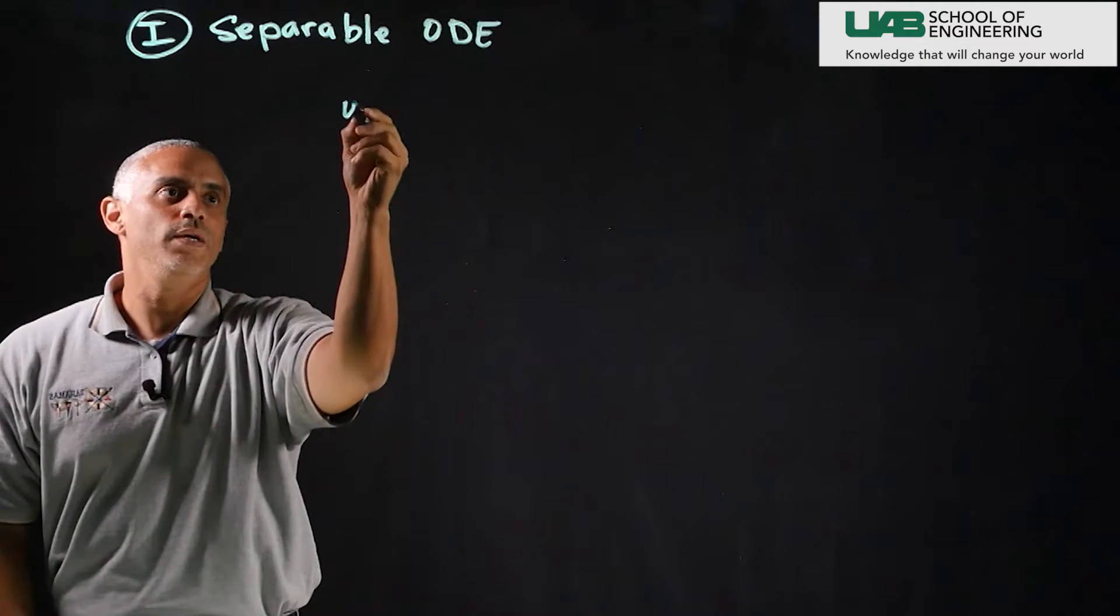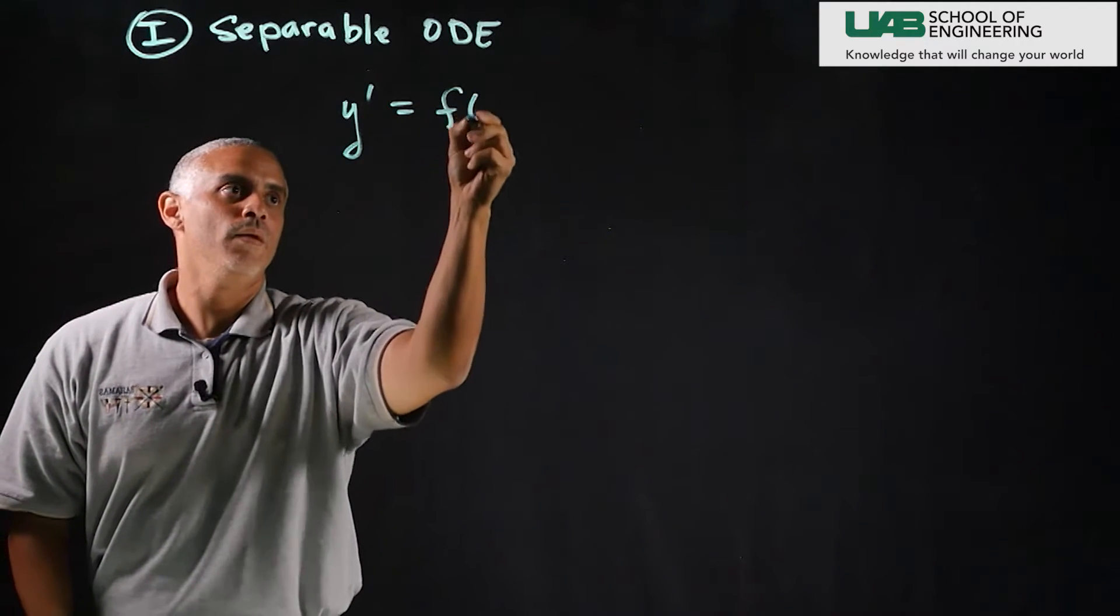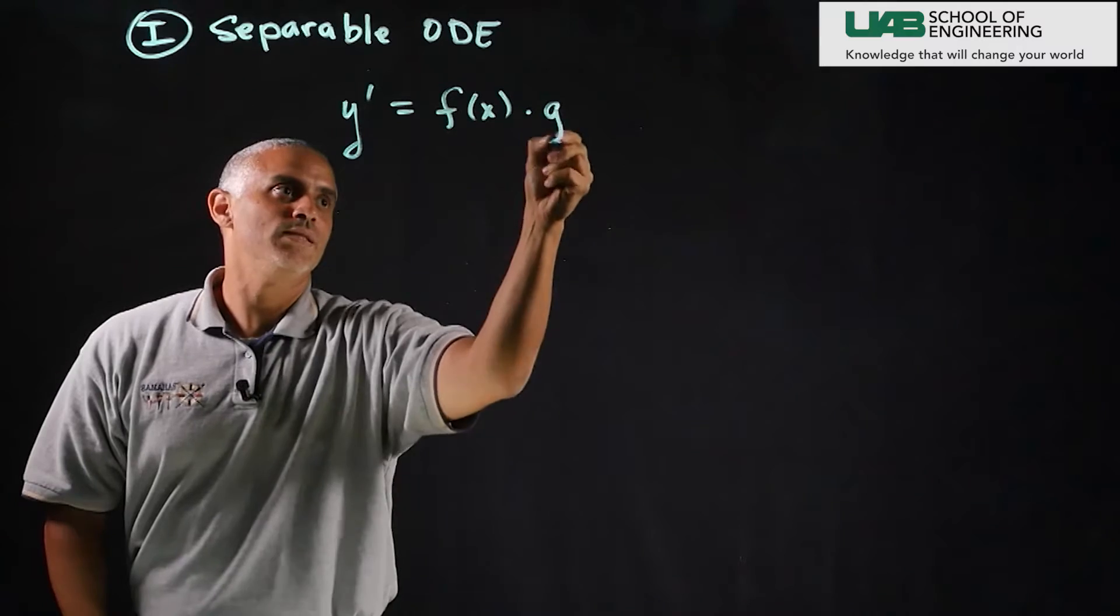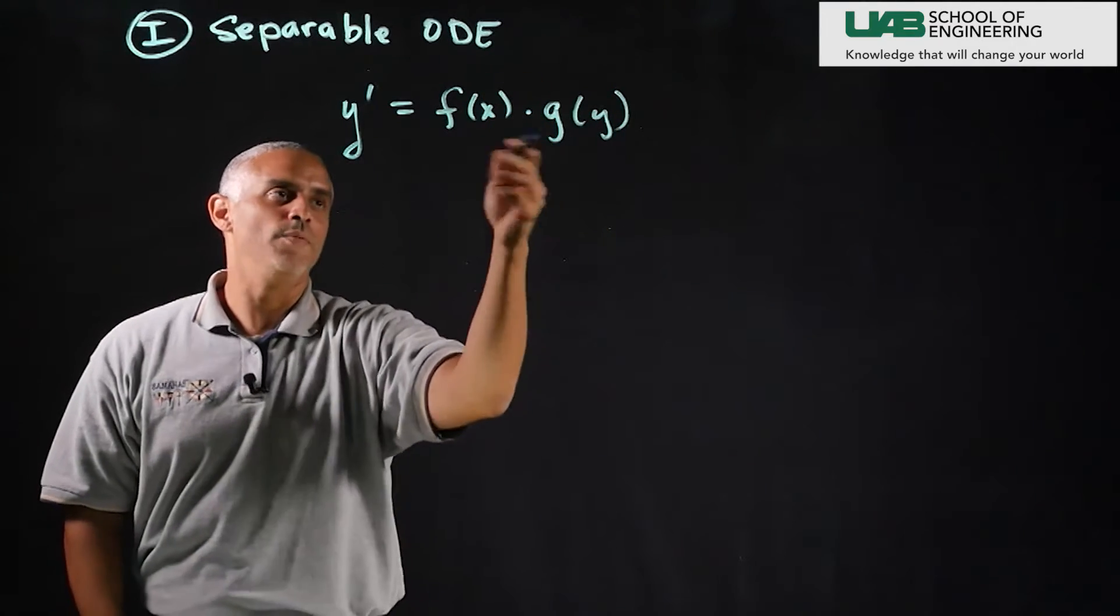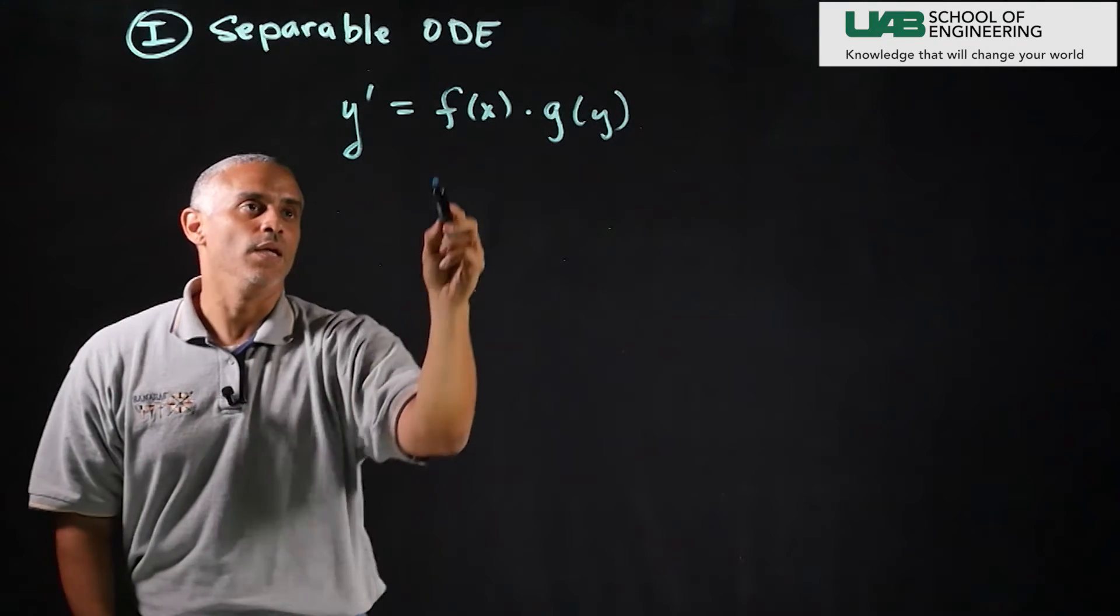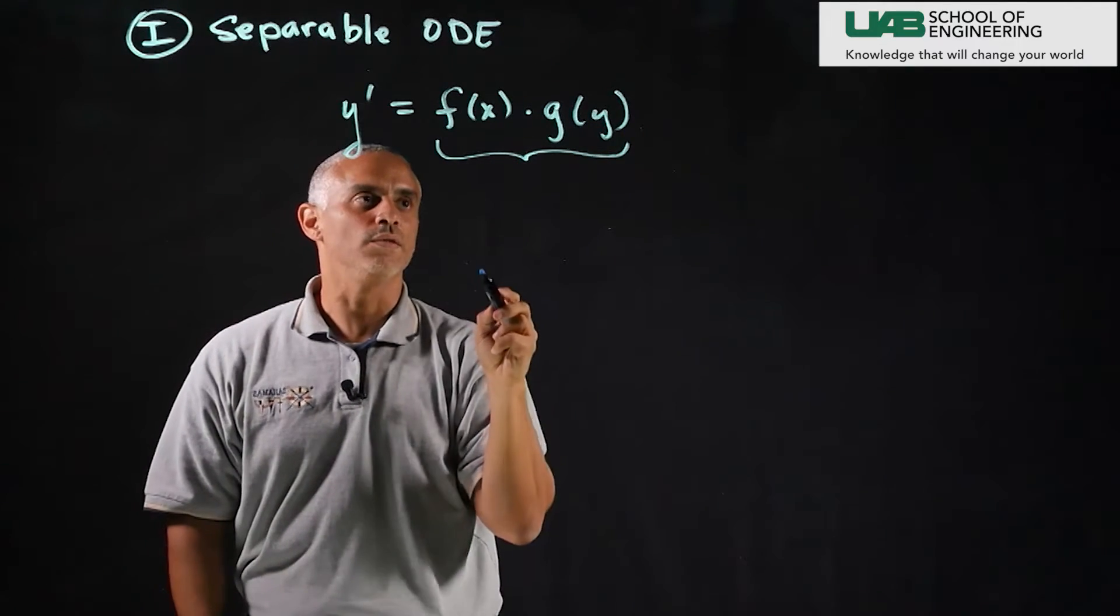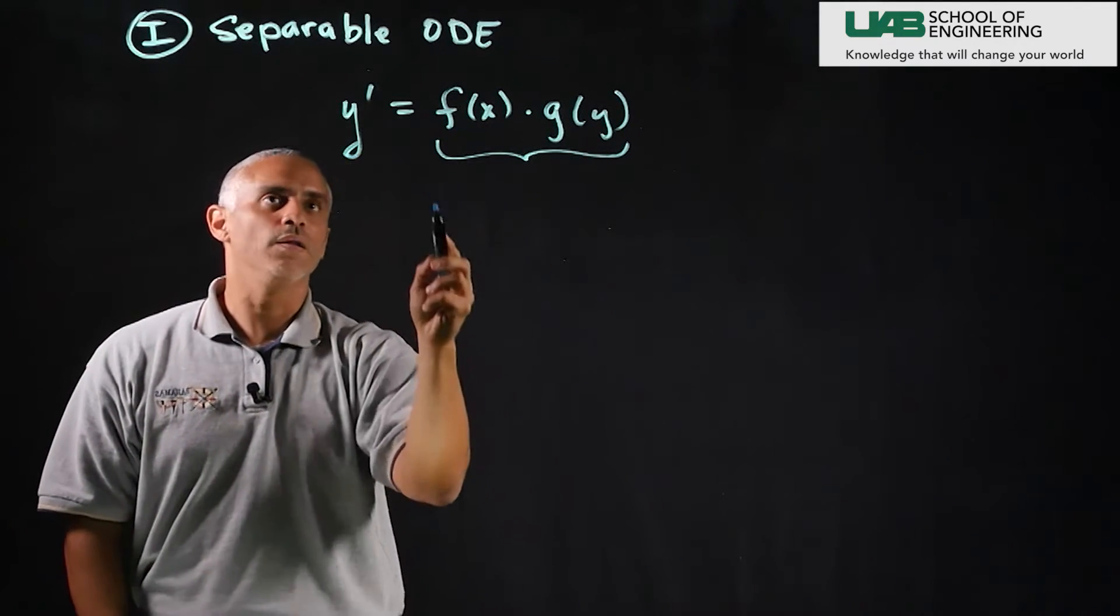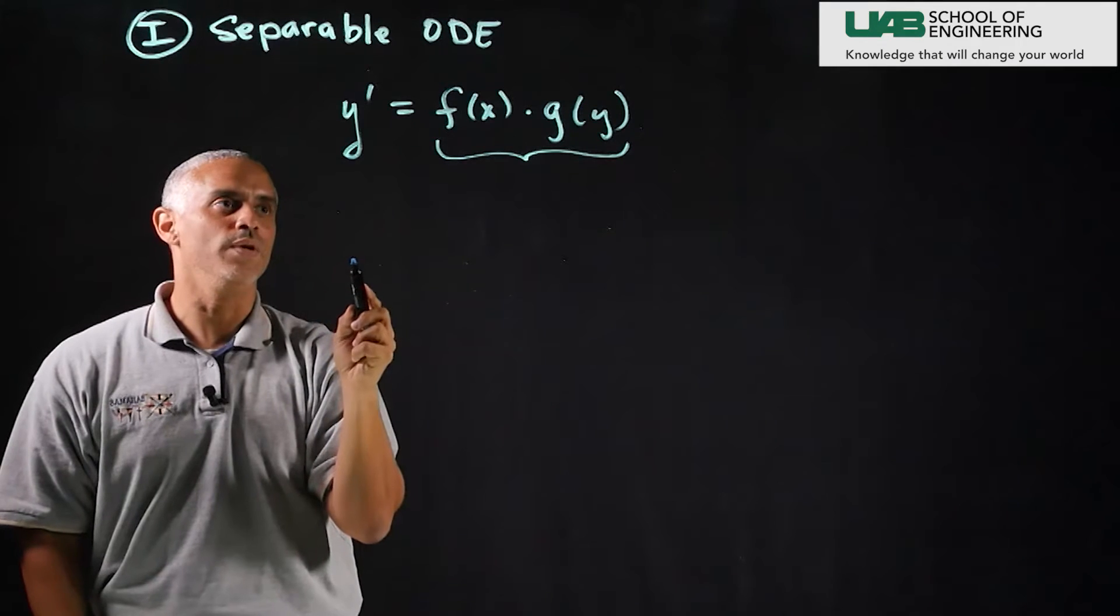A separable ODE is of the form y prime equals some function in y times some other arbitrary function in x. And if we're able to write our first-order system as this product then we're guaranteed to have a separable ODE.